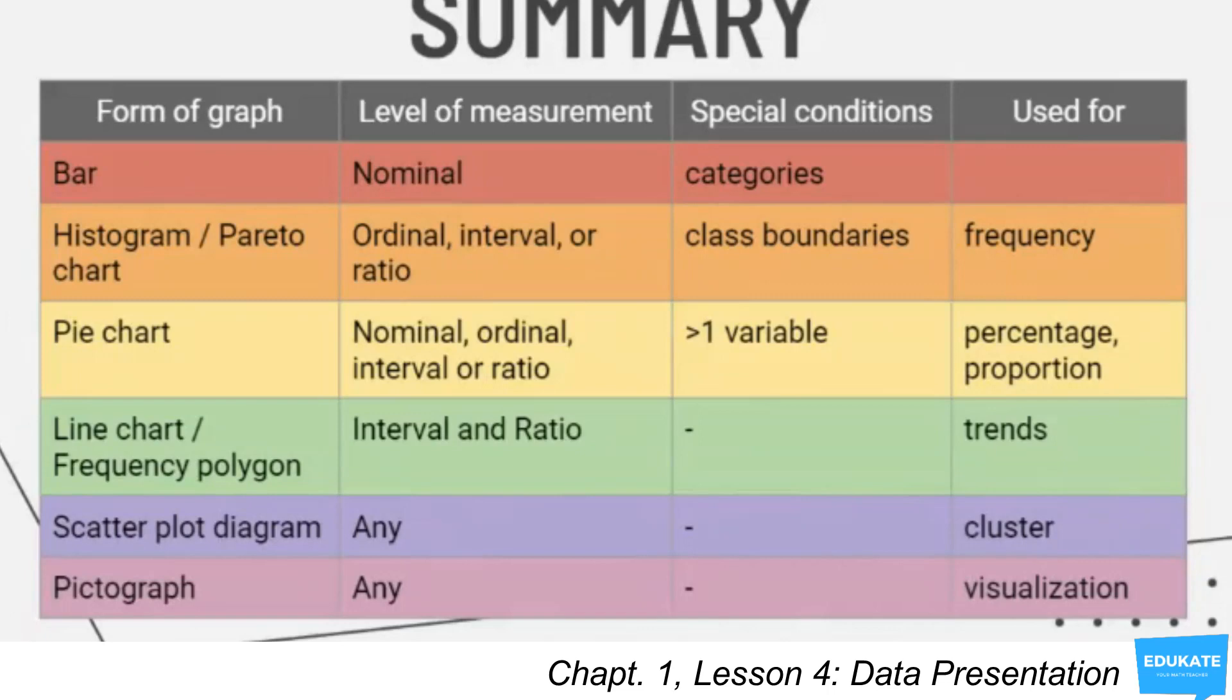For the form of graph, you have the bar graph. It's best to use in nominal level of measurement. For special conditions, your data should be divided into categories. For the histogram or Pareto chart, your level of measurement should be ordinal, interval, or ratio. Your special conditions, there should be class boundaries, and it's used for frequency of the data.